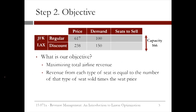The second step is to decide what our objective, or our goal, is. In this case, it's to maximize the total revenue to the airline. The revenue from each type of seat is equal to the number of that type of seat sold times the seat price. In the case of regular seats, this is $617 times R, the number of regular seats we sell. And for discount seats, this is $238 times D, the number of discount seats we sell. We sum these together to get the total revenue, and our objective is to maximize this sum.